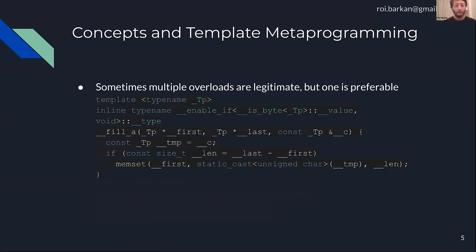Sometimes it's not about choosing algorithms with different functionality — it's choosing different algorithms because they have better performance. This looks messy, but it's an implementation inside the STL of std::fill, which fills a sequence with the same object. The default implementation does a for loop, but the STL implementer used enable_if to specialize and create a specific implementation for byte values that directly calls memset.